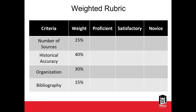With weighted rubrics, you might have categories such as number of sources and historical accuracy. You can see that historical accuracy is the most important in this particular assignment, and then organization is the next most important because the weighting is associated in that way. That tells students where they need to put extra effort — where the most points are worth.